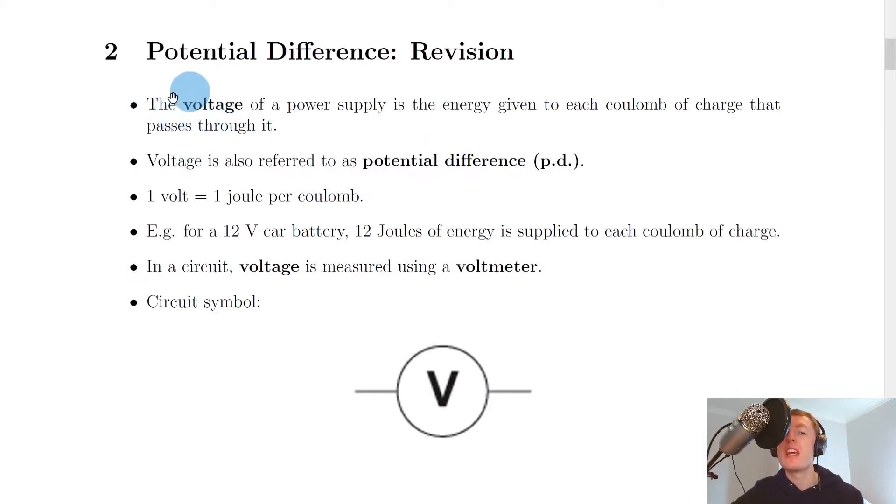The first thing we've got here is the definition of voltage or potential difference. It says that the voltage of a power supply is the energy given to each coulomb of charge that passes through it. This was the definition we saw at National 5 level.